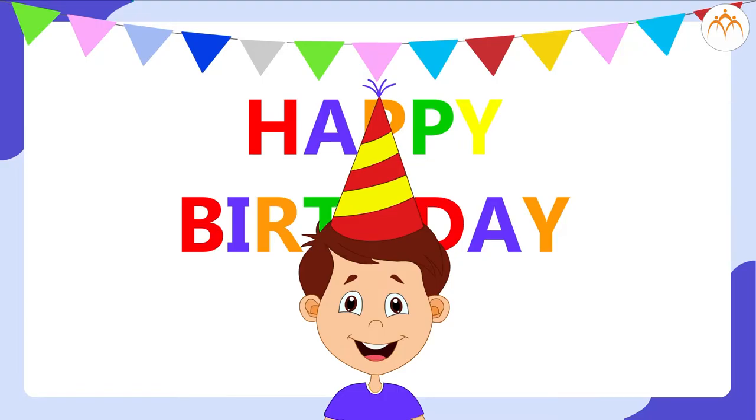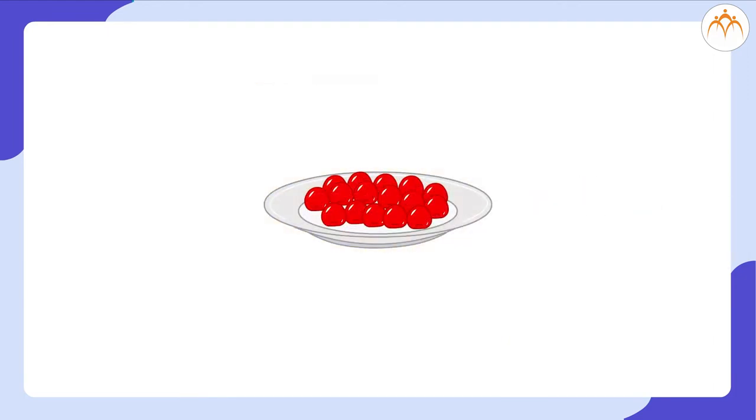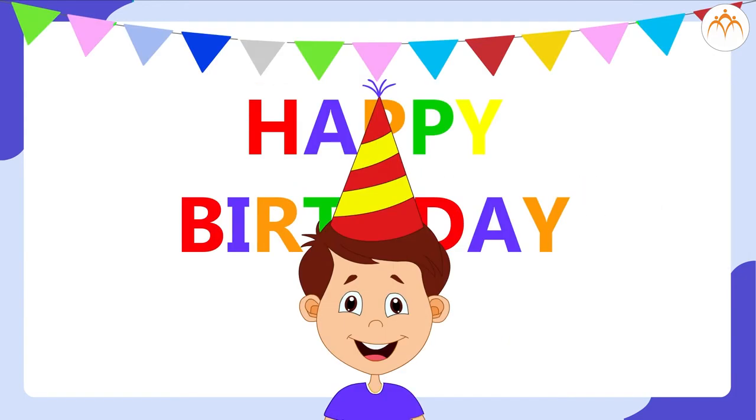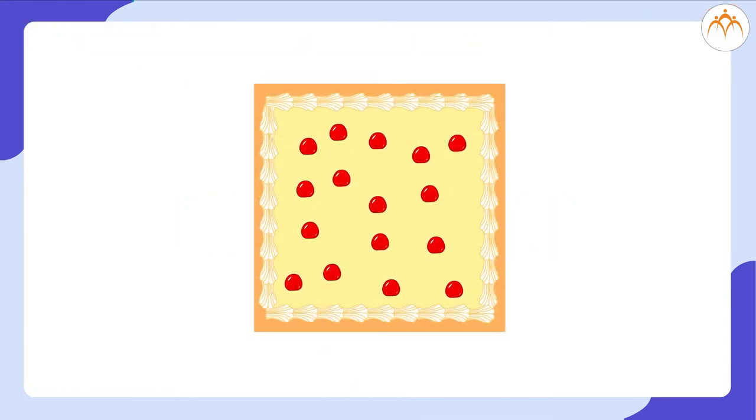It's your elder brother's birthday and your mom asks you to arrange cherries on the square-shaped birthday cake. You decide to arrange 16 cherries on the cake as your brother is going to be 16 years old. You arrange the cherries randomly like this.